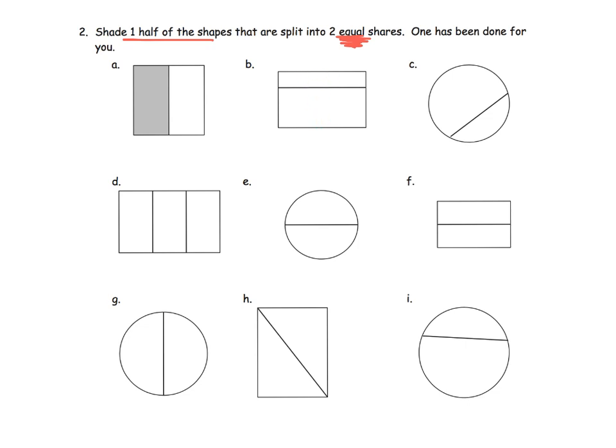This one. Two pieces, but are they equal? Nope, they're not equal. So, I'm going to go an extra step and cross it off. He's no good. How about this one? Two pieces, yes. But are they equal? No. So, we're going to cross it off.